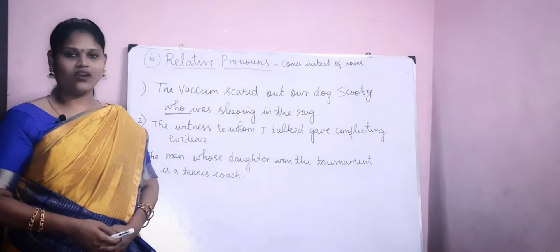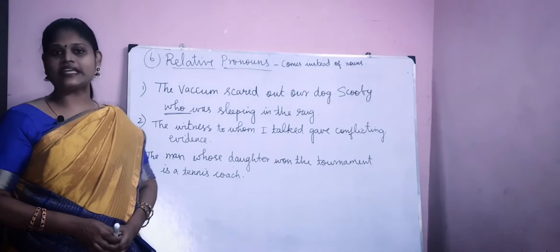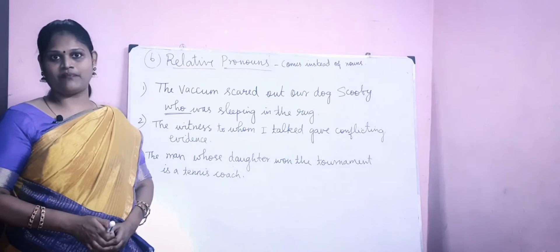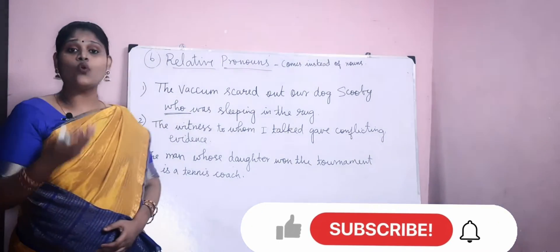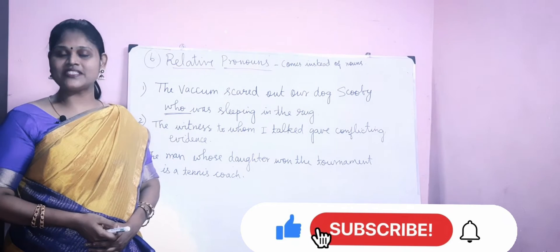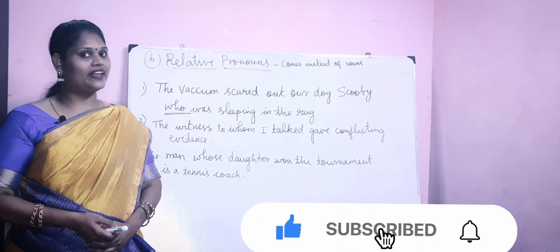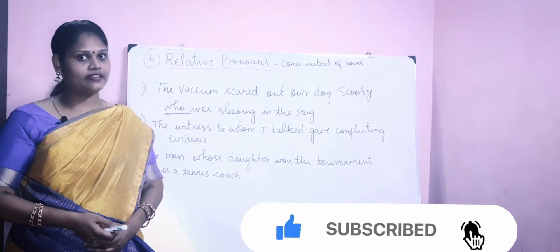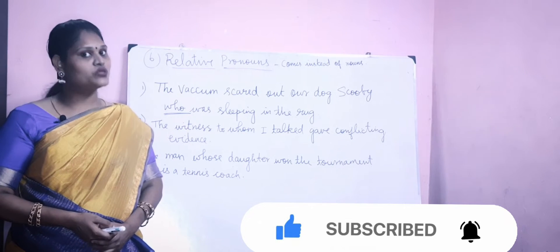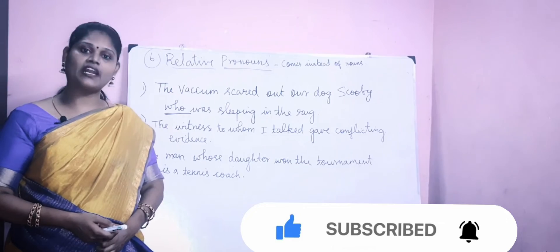The vacuum scared our dog Scooby, who was sleeping in the rug. The noun here is 'the vacuum,' and it scared the dog. The dog has a specific name — Scooby. So if you see any specific name of an animal, you can use the relative pronoun 'who.' You can use 'who' for persons as well as specific names of animals. So here, the specific name of the dog is Scooby, so you write 'who' for that.